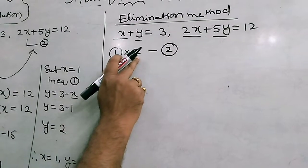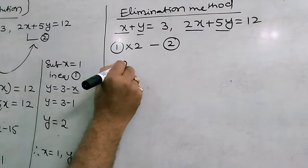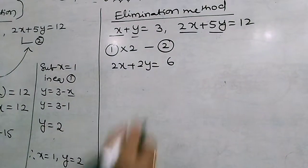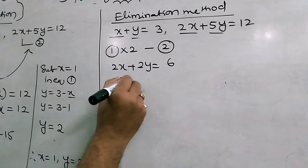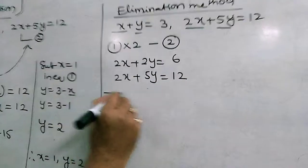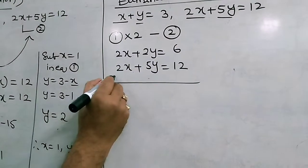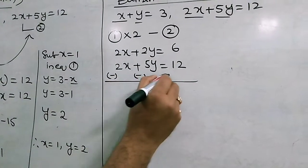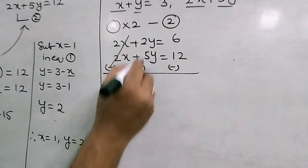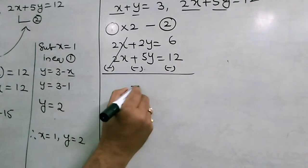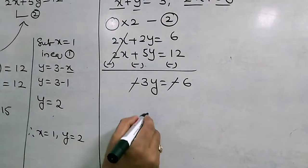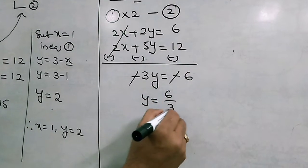Multiplying the first equation by 2: every element of x plus y equals to 3 is multiplied by 2, giving 2x plus 2y equals to 6. The second equation is 2x plus 5y equals to 12. Now subtracting — keeping the negative sign — plus 2x minus 2x cancels. Then 2y minus 5y equals to minus 3y, and 6 minus 12 equals to minus 6, so minus 3y equals to minus 6. The negatives cancel, giving y equals to 6 divided by 3, which equals to 2.